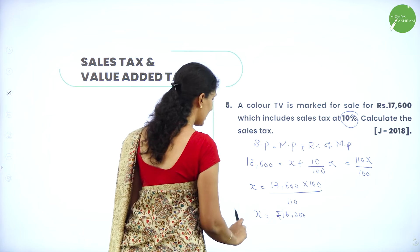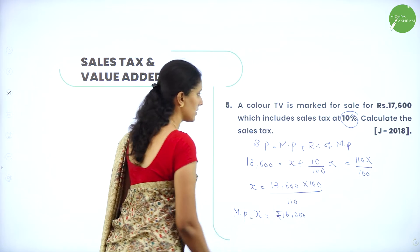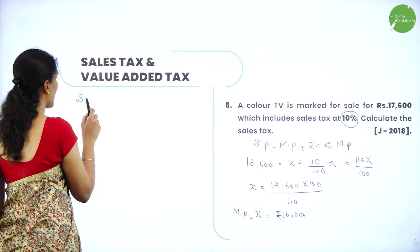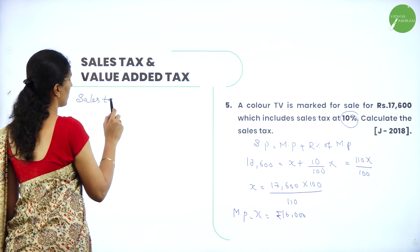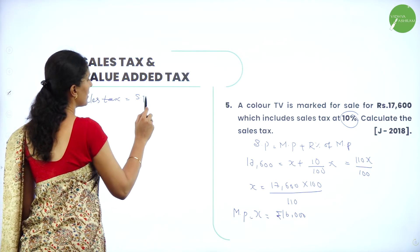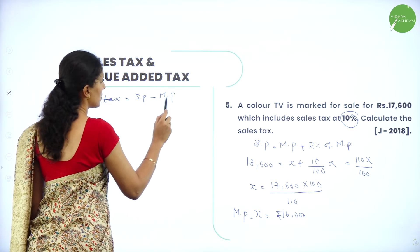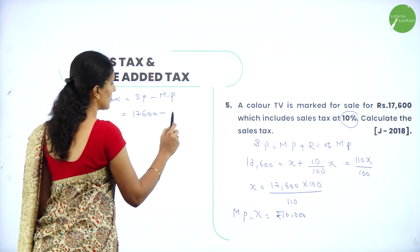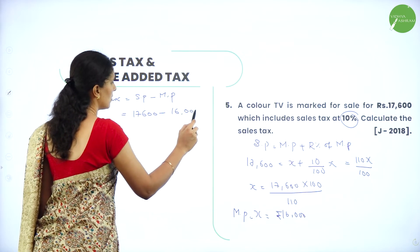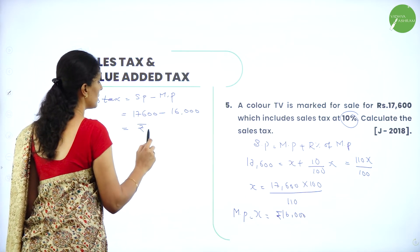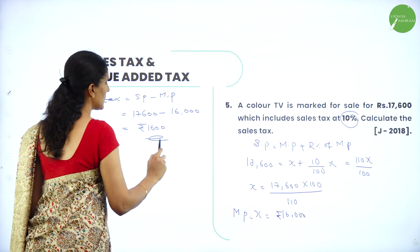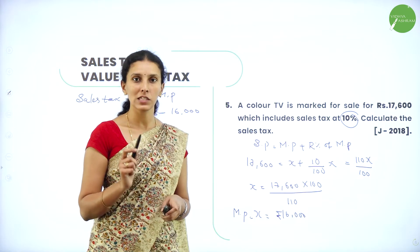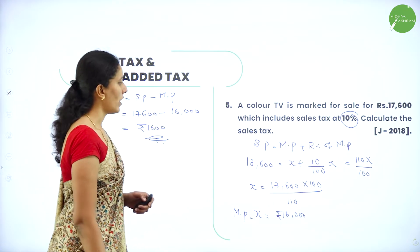So x, the market price, is rupees 16,000. Now we need to calculate the sales tax. Sales tax equals selling price minus market price. Selling price is 17,600 and market price is 16,000, so the difference is rupees 1,600. Hence the sales tax paid for the TV is rupees 1,600.